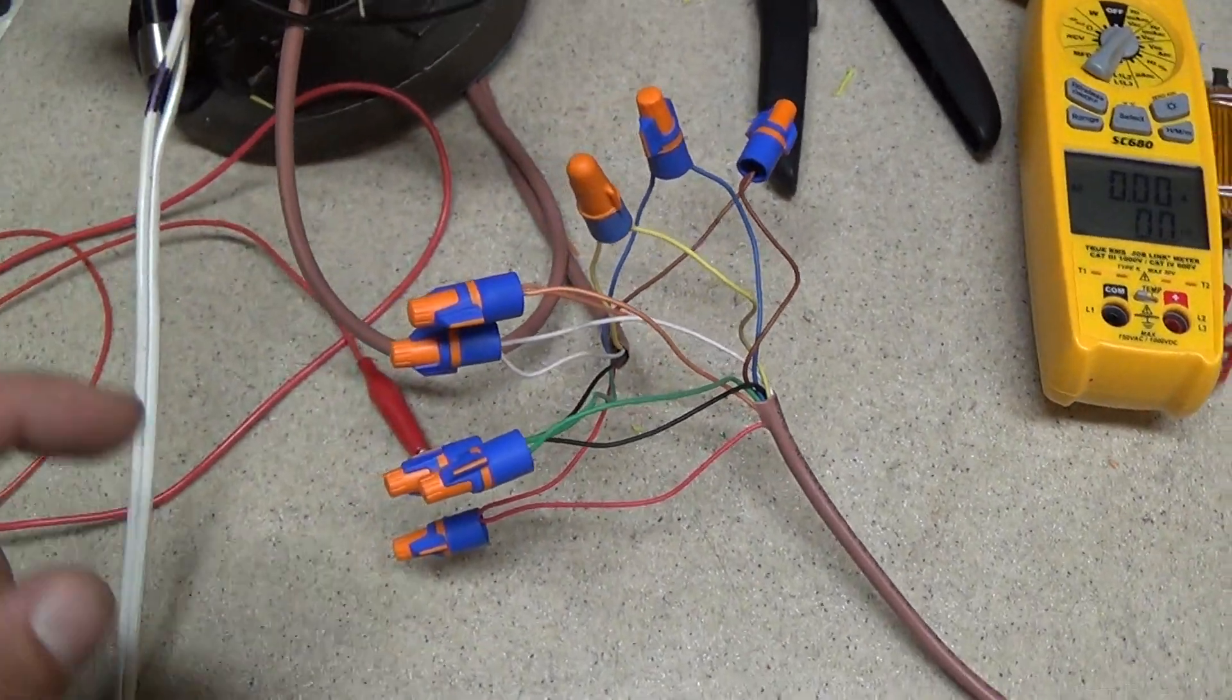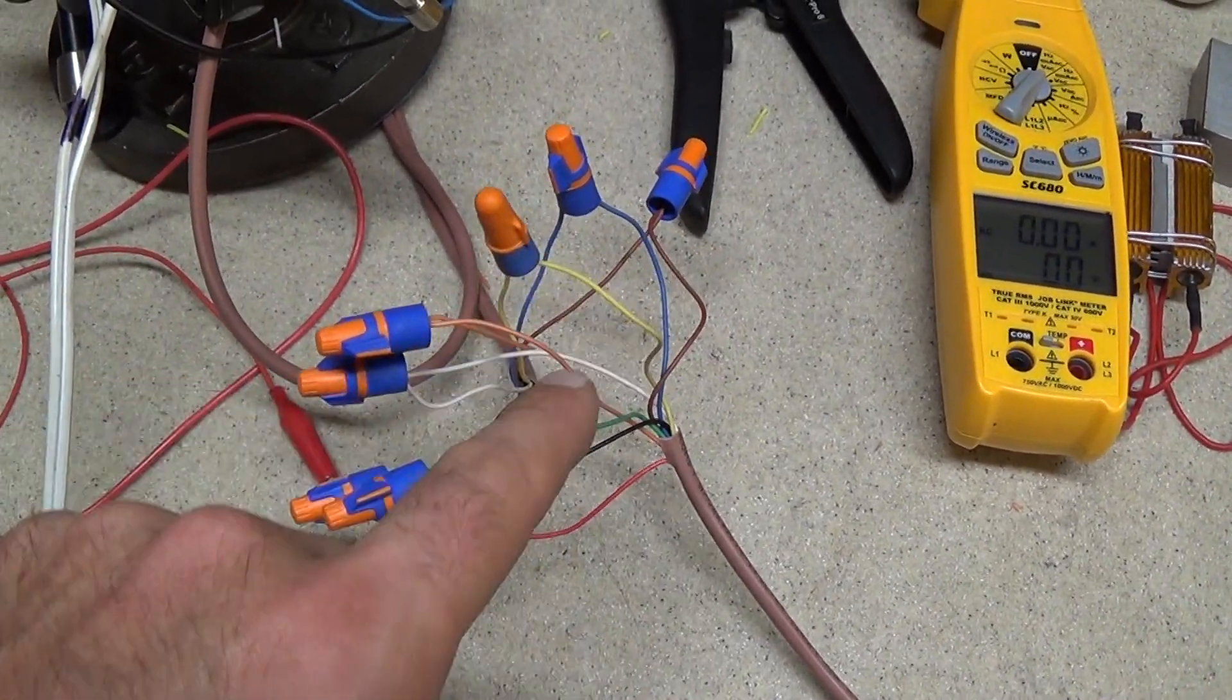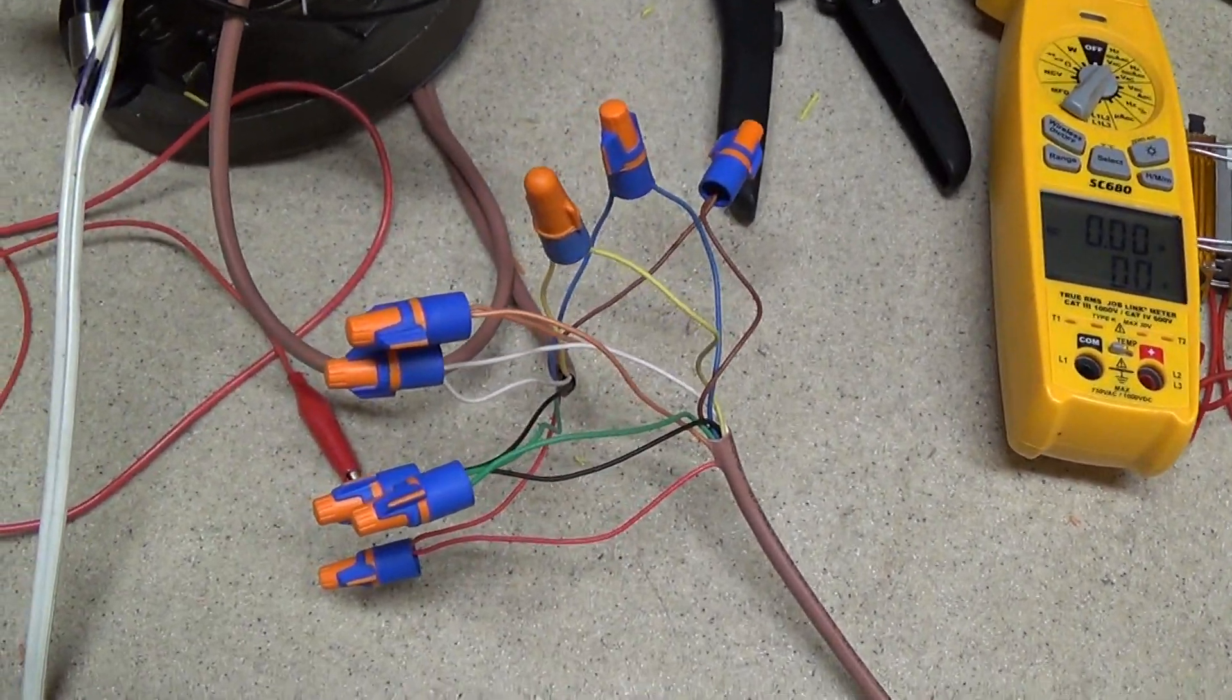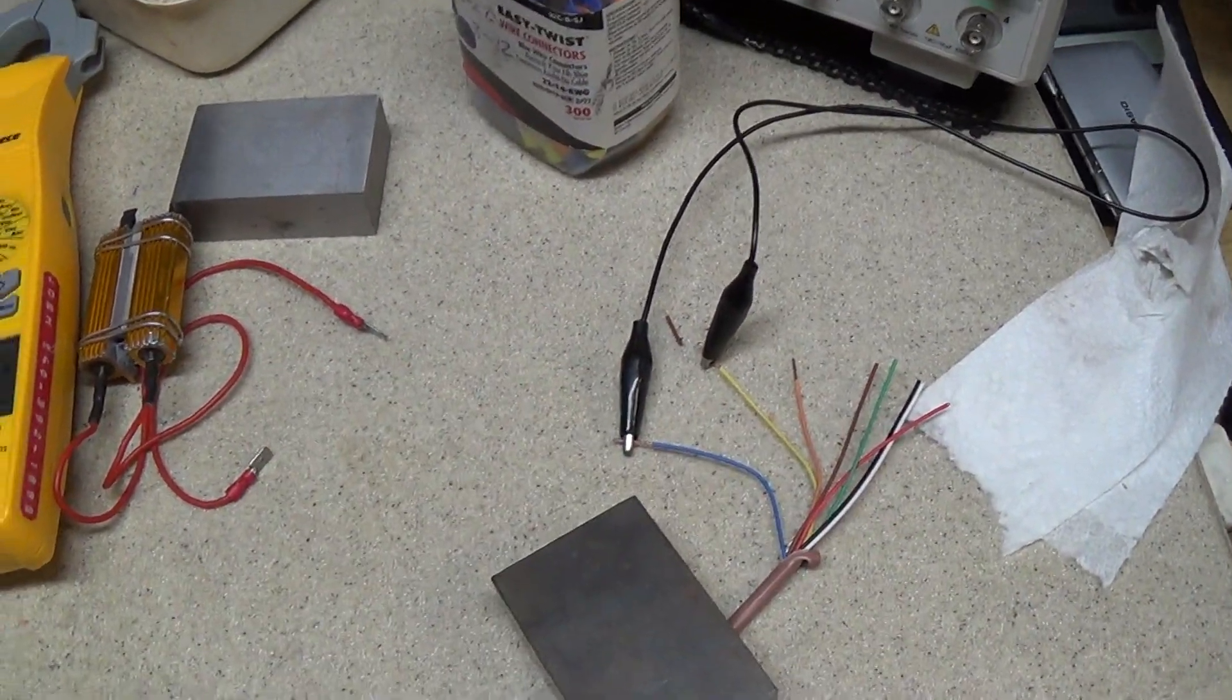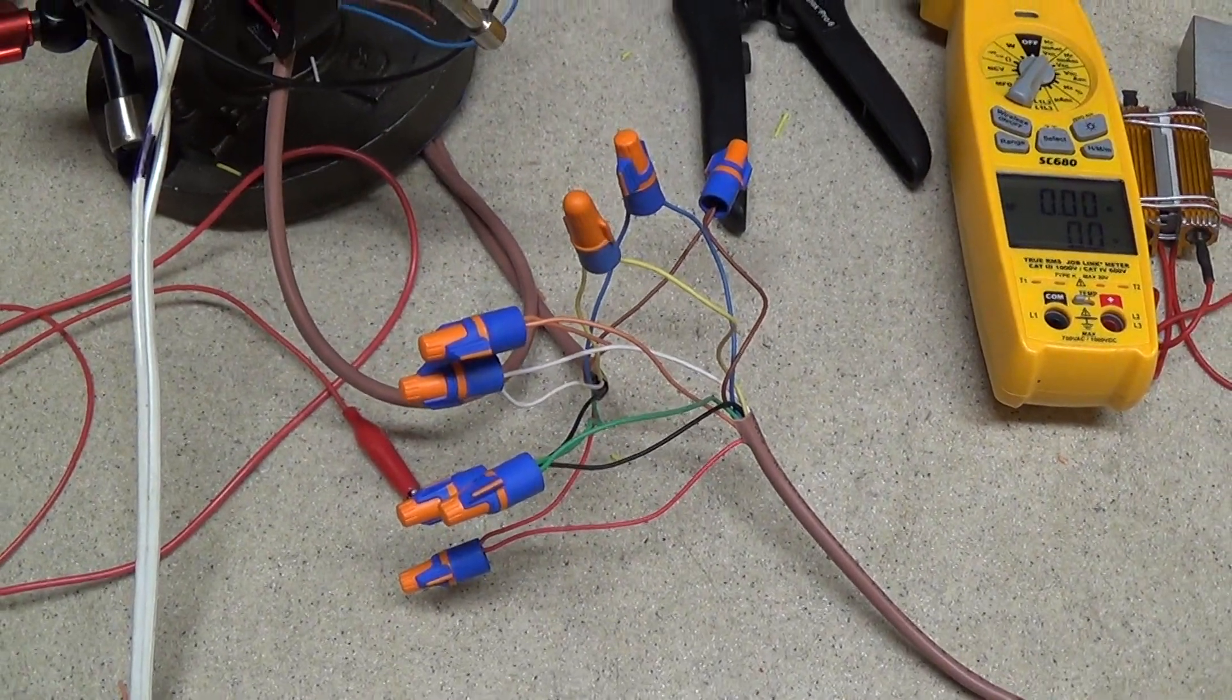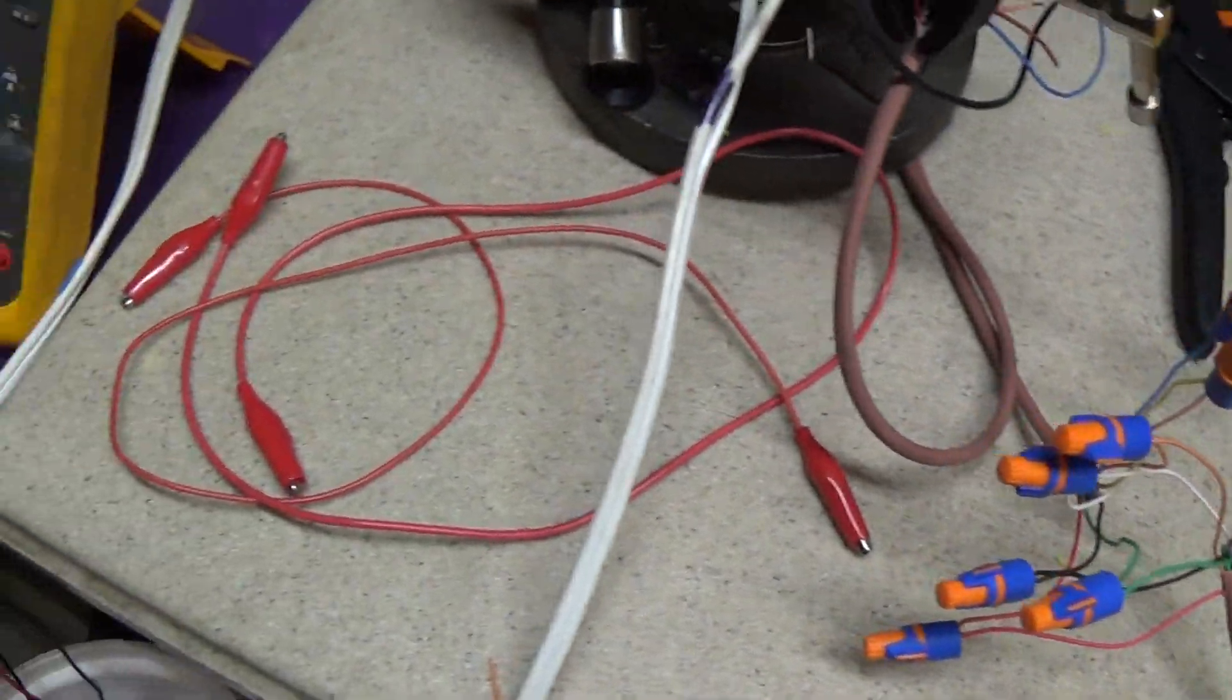And then we've got the typical kind of splices that you would see inside an air handler. So, just junctions there. And then we have it going out to the outdoor unit, and that's where I'm going to create the short. So, we're going to see how you would pinpoint that using a few different things.